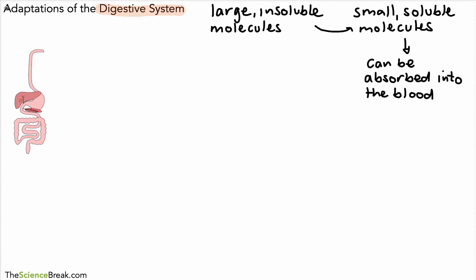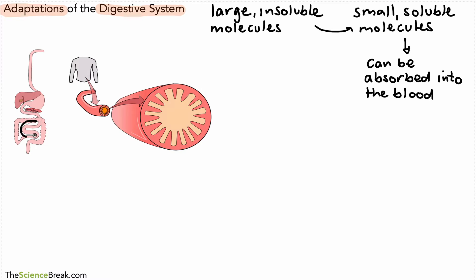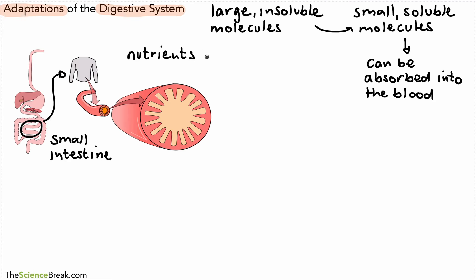Here is a diagram we've looked at before, and we're going to look at the adaptations of the digestive system. This is a more 3D version of that diagram, but here we have the small intestine. If we enlarge it, it looks something like this. The nutrients in the digestive system are found in this yellowy area here — those small soluble molecules that the digestive system has produced as a result of digestion.